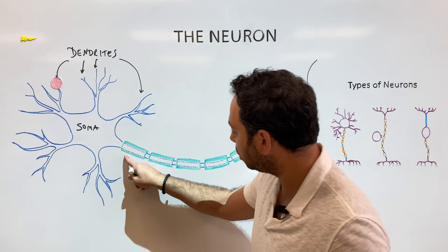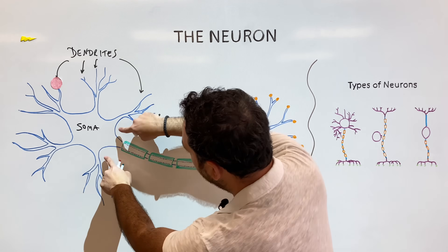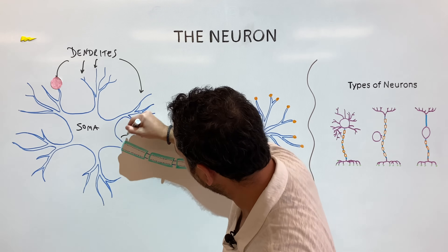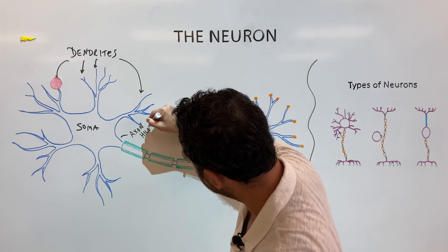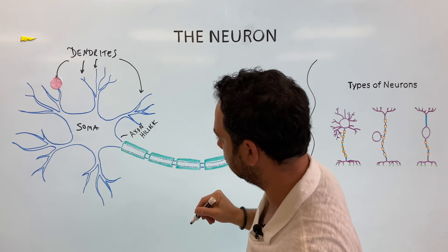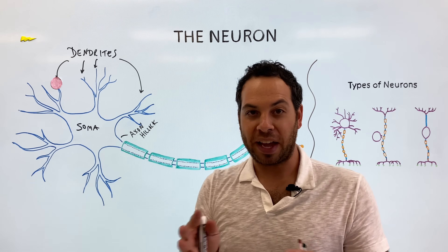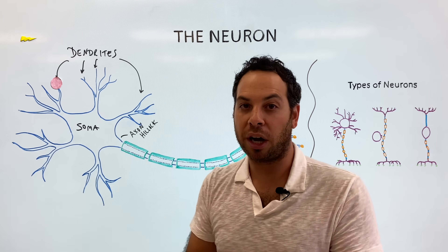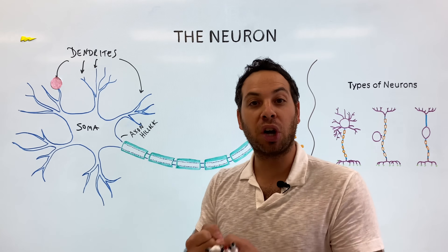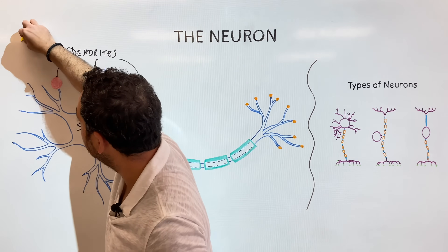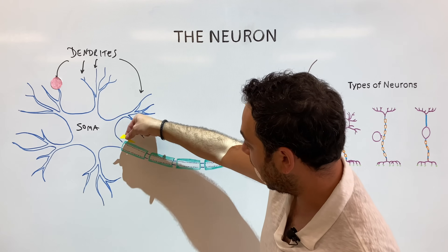Before information travels down the long tube, notice that the soma connects to that tube by a little structure called the axon hillock. This is important: if the signal is strong enough — we'll talk about that in another video — it's going to generate an electrical charge called an action potential. That action potential starts in the axon hillock.